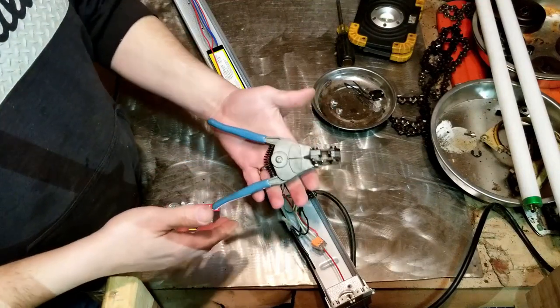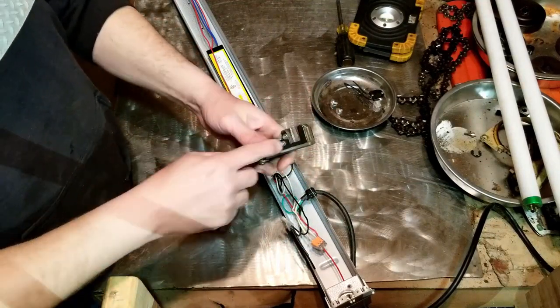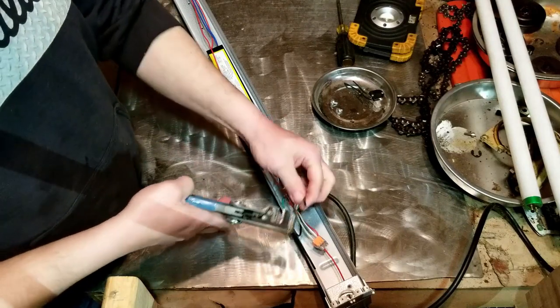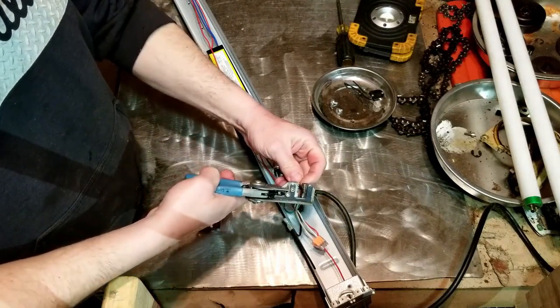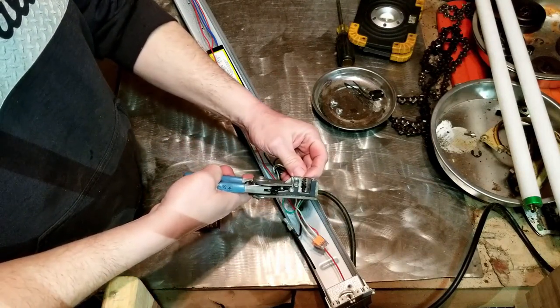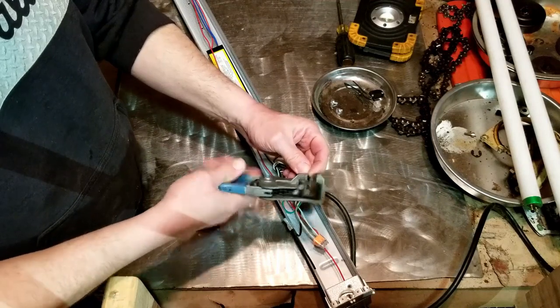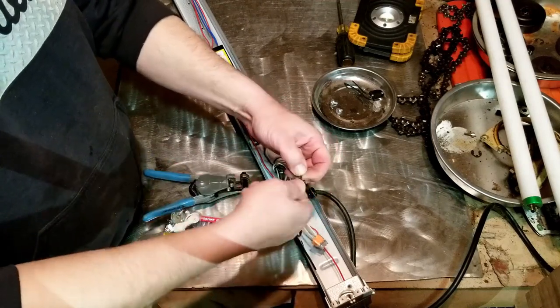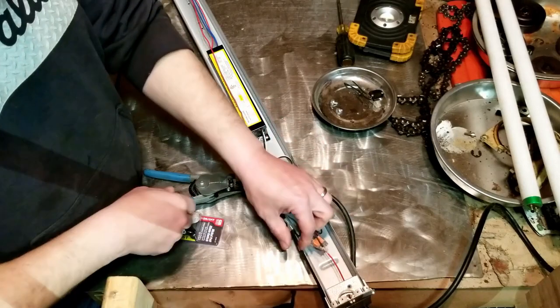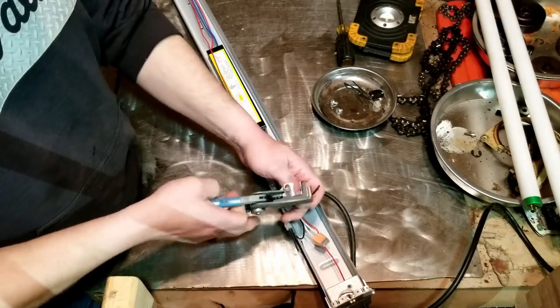I've got one of these really handy wire strippers here. It does different gauges of wire. What you do is put the wire in the correct slot and you just squeeze the handle, and it strips the coating right off of there. Do that to both of these.